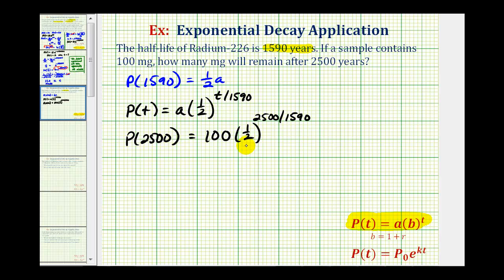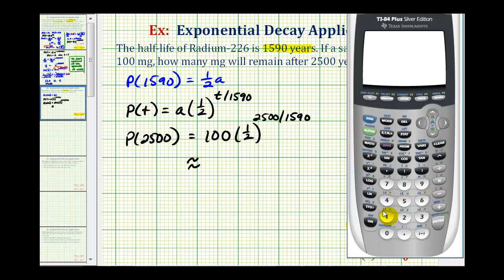This function value will tell us how much remains after 2,500. So now we'll go to the calculator. So we'll have 100 times one-half in parentheses, raised to the power of 2,500 divided by 1,590 in parentheses.